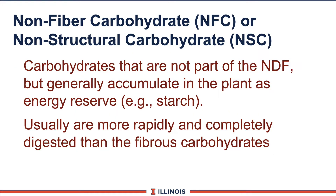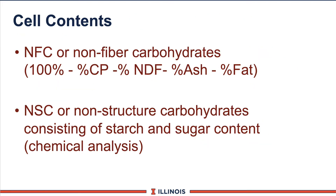You'll have two terms: non-fiber carbohydrates, known as NFC, or non-structural carbohydrates. Both of these are rapidly and more completely digested fractions of the plant material, and depending on the type, this will determine its rate. NFC or non-fiber carbohydrates is calculated as: 100 minus the percent crude protein, minus the percent NDF, minus the percent ash or mineral, minus the percent fat. So any error made in the analyses will compound this number as well.